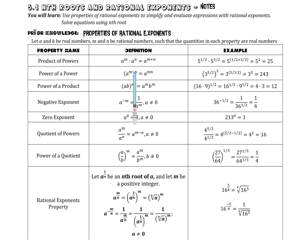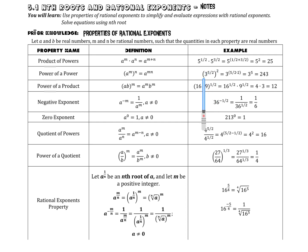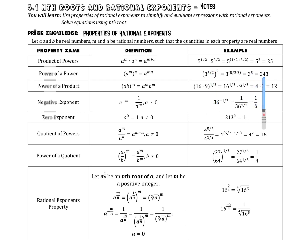If we have a power to a power, instead of adding, we multiply. So 3 to the 5/2 squared means we take 5/2 and multiply it by 2, which is 5 times 2 divided by 2, so just 5. Therefore 3 to the 5th is 243.